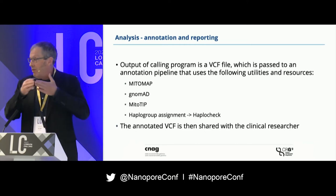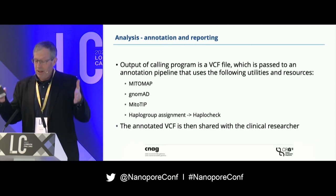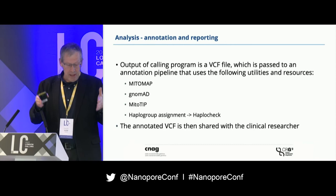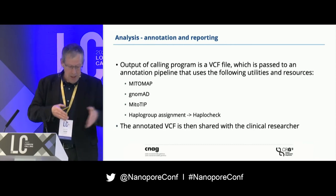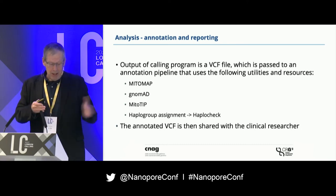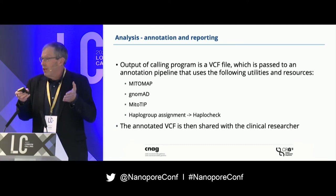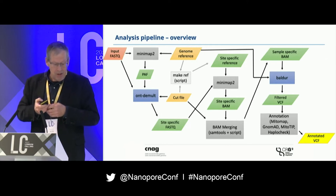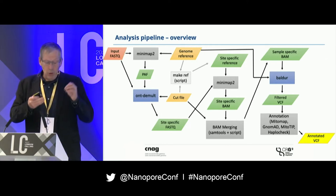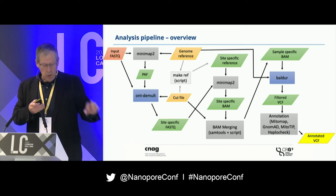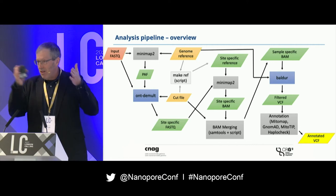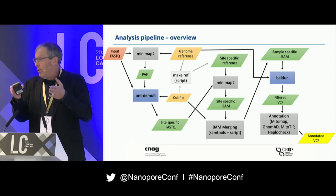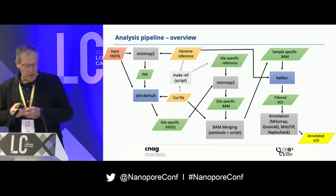Once you're at that point, you can generate a nice variant call file. You feed this variant call file into Mitomap, Genomat, and Mitotyp to assign haplotype groups, do a haplotype check, and get an annotated file. It tells you whether you actually have a pathogenic variant and what is up in the file. The two blue tools — the ONT demultiplex — handle demultiplexing the reads, and Baldur on the right side does all the statistics to find the alternative variant calls.